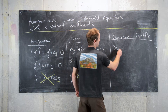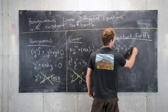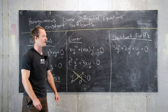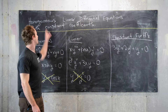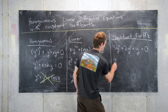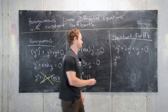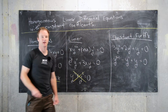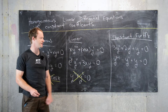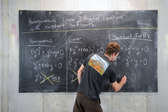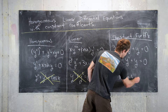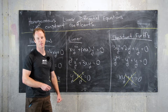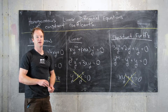An example satisfying all three conditions: 3y'' + 2y' + y = 0 — it has constant coefficients, is linear in the dependent variable, and is homogeneous. Another example is y'''' − y'' + y = 0. A non-example is xy' + y = 0, because x is not a constant coefficient.